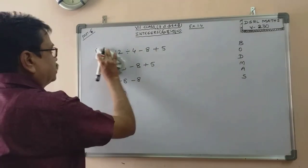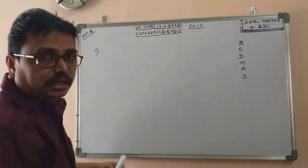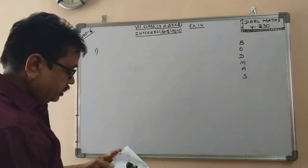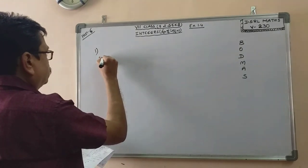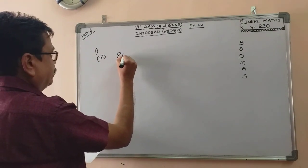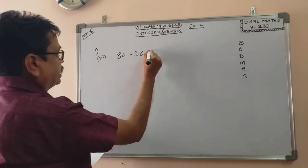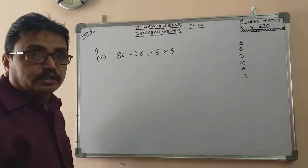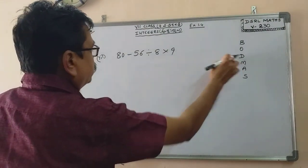Third example: 80 minus 56 divided by 8 into 9. We apply BODMAS — first brackets, then division.